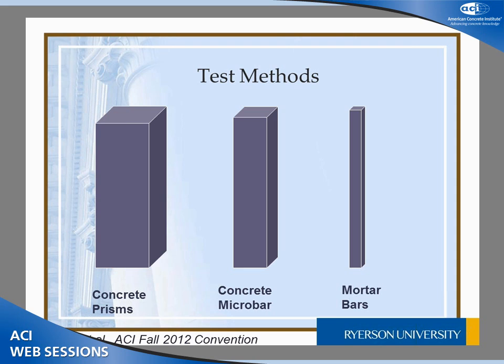I'm going to talk about the concrete prism test, the accelerated mortar bar test, and some work on scanning electron microscopy. The concrete prism test uses a concrete mix — coarse aggregate, fine aggregate, and cement — very close to what you use in an actual structure. The prism is soaked, exposed to high humidity, and tested. The acceleration is achieved only through elevated temperature at 38°C with slightly elevated alkali levels. You get results in about one year for aggregate, or two years when evaluating preventive measures.